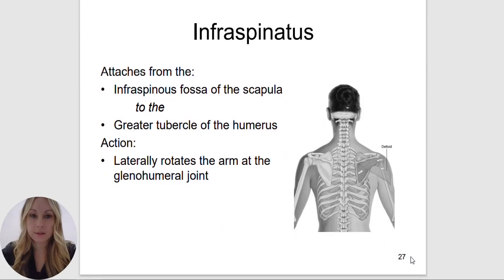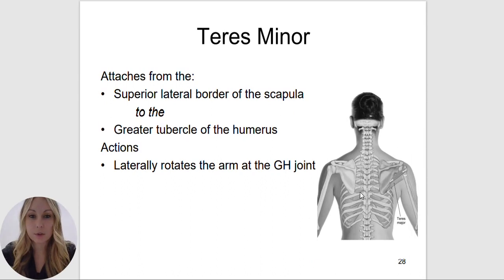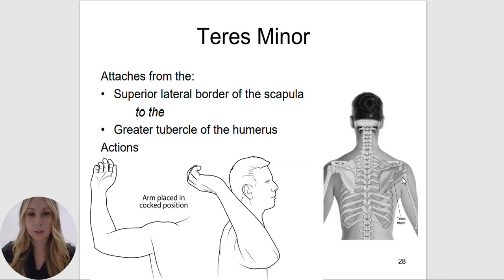The infraspinatus is going to be inferior to the spine of the scapula. It attaches to the infraspinatus fossa of the scapula, below the spine of the scapula, to the greater tubercle of the humerus, and it's going to laterally rotate the arm at the glenohumeral joint. The teres minor is also going to be a lateral rotator. It attaches to the superior lateral border of the scapula to the greater tubercle of the humerus. You can think of the teres minor and infraspinatus as a pitcher at a baseball game winding up their hand to throw a ball.